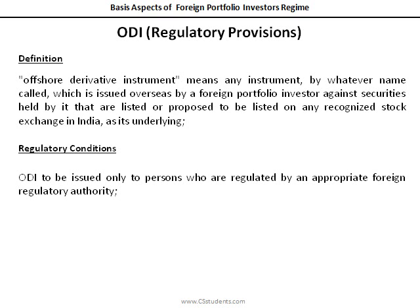Those conditions are: First, such Offshore Derivative Instruments are issued only to persons who are regulated by an appropriate foreign regulatory authority. The rationale is that even through an Offshore Derivative Instrument, only regulated entities can make the investments. In our earlier example, if MU Enterprises wanted to make investment through P-Note, it has to be a regulated entity. Unregulated entities cannot take the ODI route to make investment in Indian stock markets.